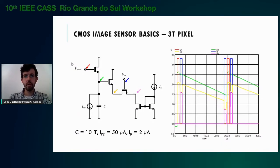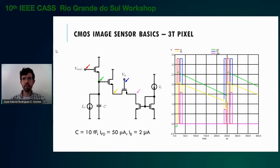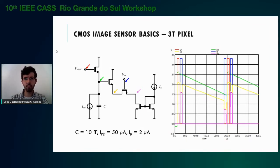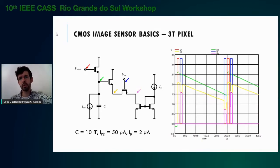In a CMOS image sensor, the basic sensing device is the photodiode, implemented by a reverse-biased PN junction exposed to light. Because of the photoelectric effect, the reverse current increases proportionally to the incident light intensity. A simple electrical model is a current source, IPD, placed in parallel with the junction capacitance C. In a 3T pixel, three transistors are placed inside the pixel. The first is a reset transistor, which sets an initial voltage for the photodiode cathode. After the reset, the photodiode cathode voltage follows a descending line whose derivative is proportional to IPD.